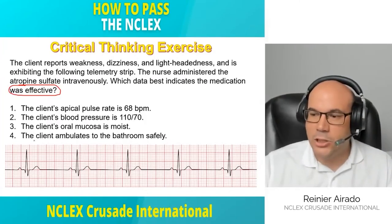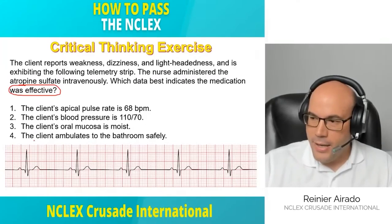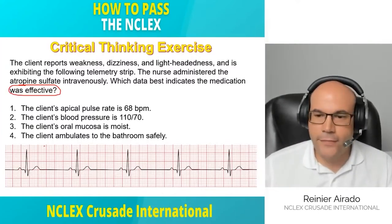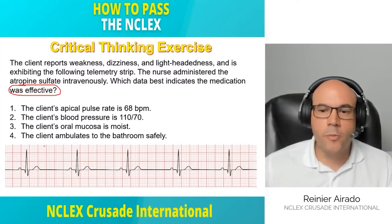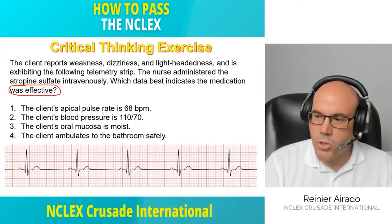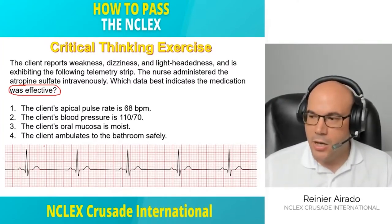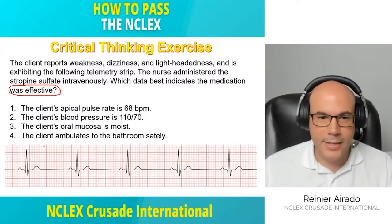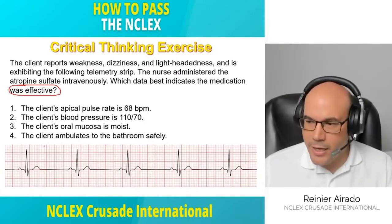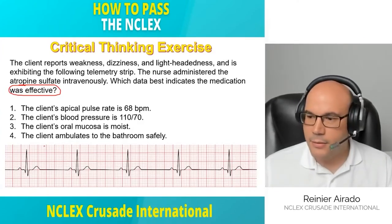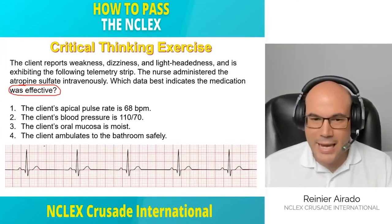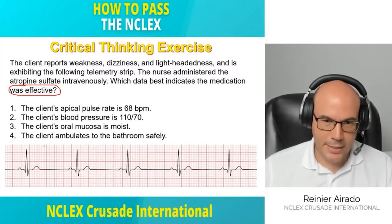To answer this question you have to interpret the EKG strip. In this scenario the heart rate is about 50 beats per minute. Using either method to interpret an EKG, the heart rate is below 60, which indicates sinus bradycardia. There is a P wave for every QRS, the PR interval is normal, and it is regular — so this is sinus bradycardia.